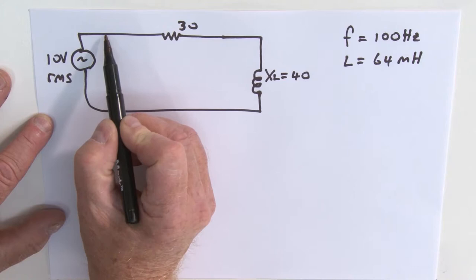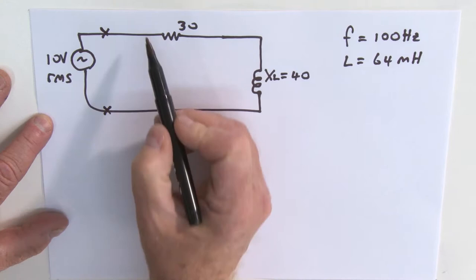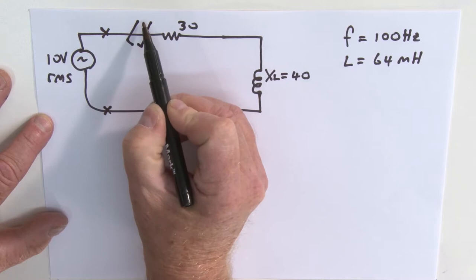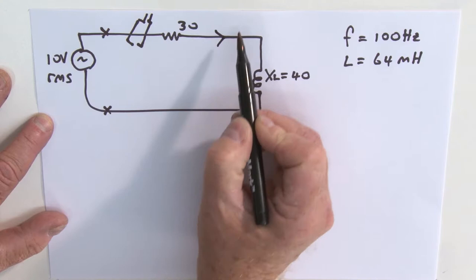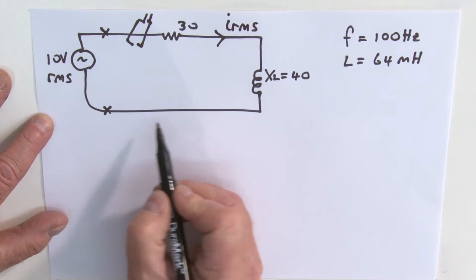With the power meter, what we're going to do is measure the voltage between that point and that point. And in the clamp-on aspect of the meter, we're simply going to clamp around like so, so that we can measure the current. It's the current in this circuit that we're interested in, which I'm going to call IRMS.